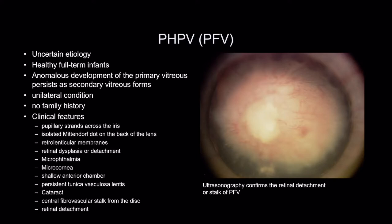PHPV, or PFV — persistent fetal vasculature — is of uncertain etiology. It occurs in healthy full-term individuals. There is anomalous development of the primary vitreous, which continues to persist as the secondary vitreous forms. It's a unilateral condition with no family history.